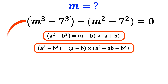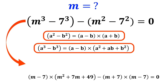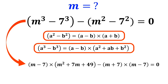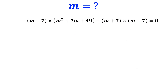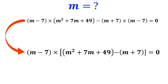So we can rewrite this equation as follows: m minus 7 times m squared plus 7m plus 49, minus m minus 7 times m plus 7, is equal to zero. We factor out m minus 7, and this equation becomes m minus 7 times the quantity m squared plus 7m plus 49 minus m minus 7, which is equal to zero.